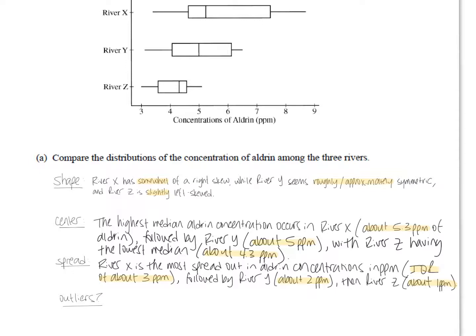I chose IQR. If I remember range, you're looking at the maximum and the minimum number here, and you're subtracting them. I did IQR, so I did Q3 minus Q1. And again, we don't know what these exact numbers are. That's why I'm using the word about very liberally. So river X is obviously the most spread out if you look at IQR or if you look at range, but I labeled my IQR of about 3 ppm for that, followed by river Y about 2 ppm, and then river Z about 1 ppm.